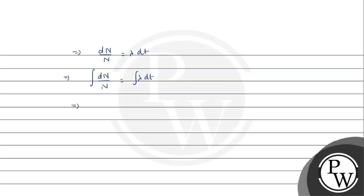The integration of 1/n dn gives log N. So log N is equal to lambda t, and since both are separate integrations, we have an integration constant capital C. We know that the integration of 1/x dx is log mod x. So here we have log N is equal to lambda t plus C.